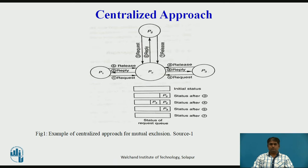Suppose P1 wants to enter a critical section, for which it sends a request message to PC. On receiving the request message, PC checks to see whether some other process is currently in that critical section. Since no other process is in the critical section, PC immediately sends back a reply message granting permission to P1. When the reply arrives, P1 enters the critical section.